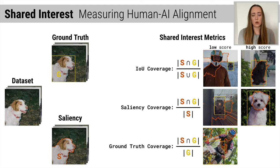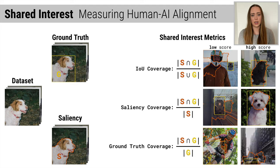High ground truth coverage indicates that all of the ground truth features are salient, like in this example where the saliency focuses on the biker as opposed to the bike. High ground truth coverage indicates all of the ground truth features are salient, like in this image where the saliency highlights the cab and the street behind it.